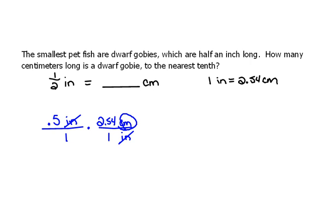And we're left with centimeters, which is what we want. So 0.5 times 2.54 is 1.27. And rounded to one decimal place, that would be about 1.3 centimeters. So a half an inch is roughly equivalent to 1.3 centimeters.